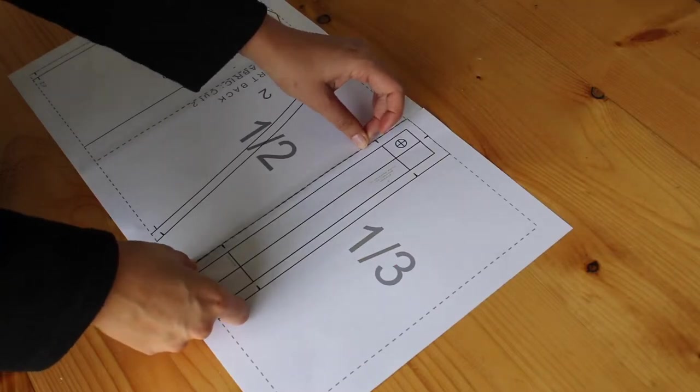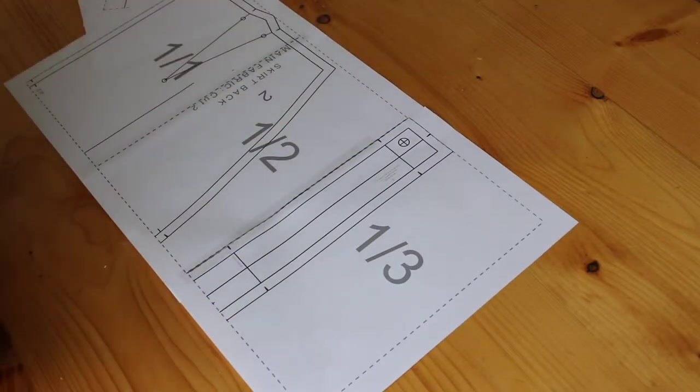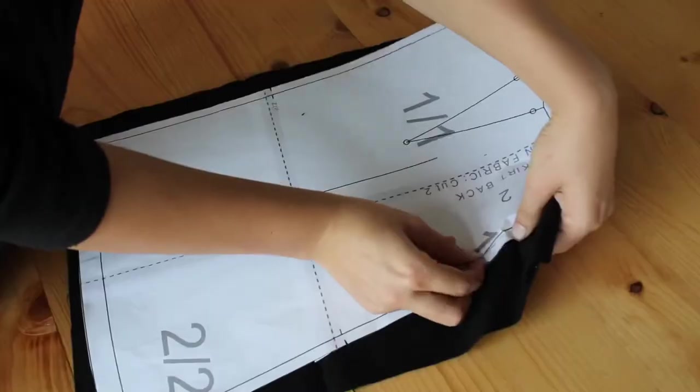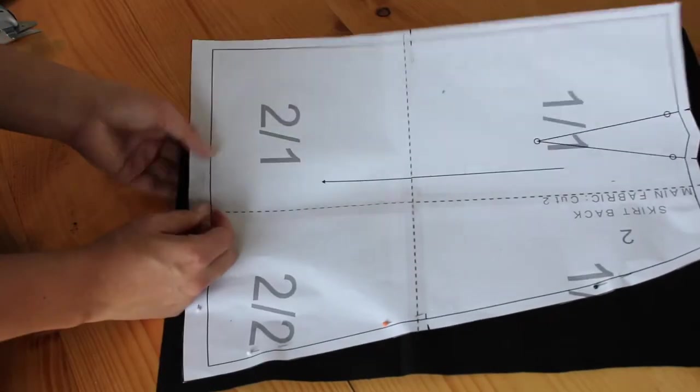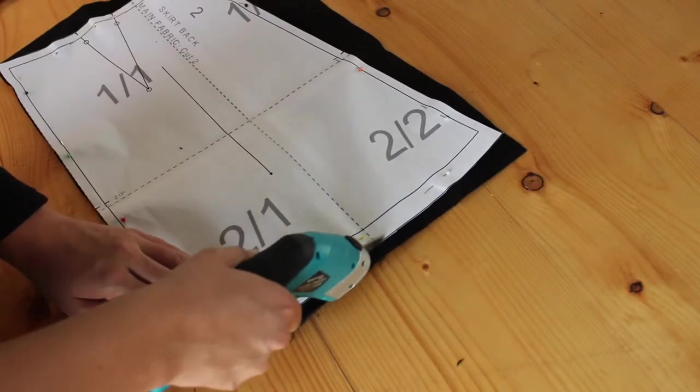So I'm going to start by taping my pattern pieces together and cutting everything out. After that, I'm going to pin my pattern pieces to my fabric and I'm going to cut out all the pieces I need.